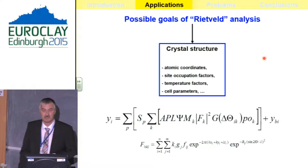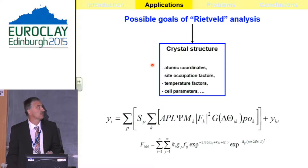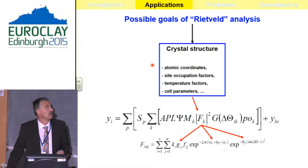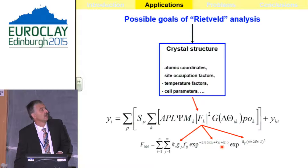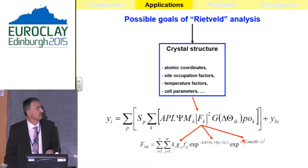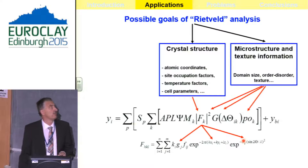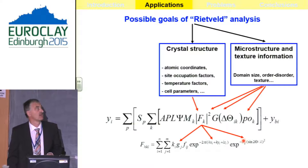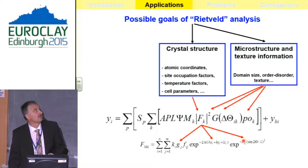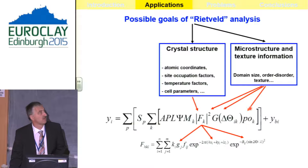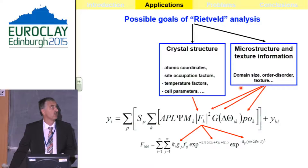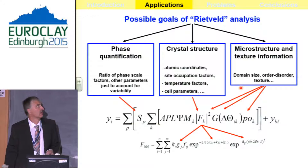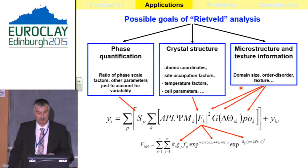The possible goals of Rietveld analysis are of course the traditional ones: the crystal structure, focusing on structure factors and parameters like occupancies, x, y, z coordinates, and temperature factors. Another possible application is microstructure and textural information taken from the peak profile — from texture correction factors or even from the influence on structure factors — for example domain size, order, disorder, and texture. And of course the last application: quantitative phase analysis.